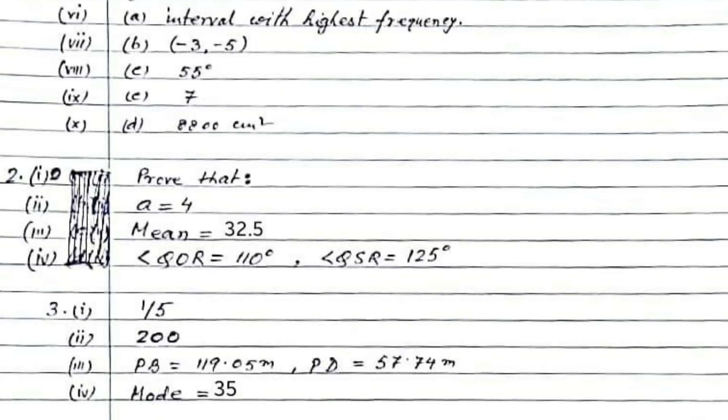Question number 3: Answer to the first question is 1 by 5. What is the probability that a ball drawn is a red ball? The correct answer will be 1 in 5. The answer to the second question is 200. Find the number of cylinders so formed: 200.